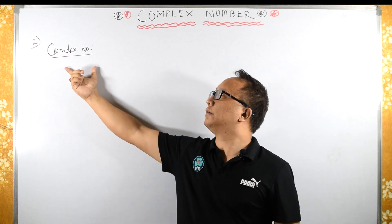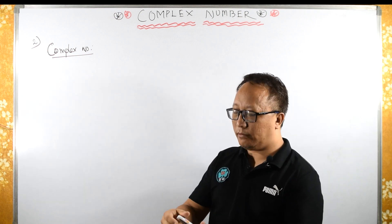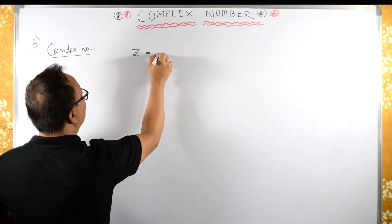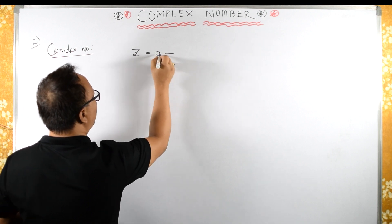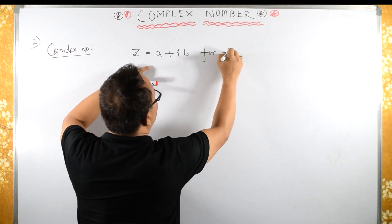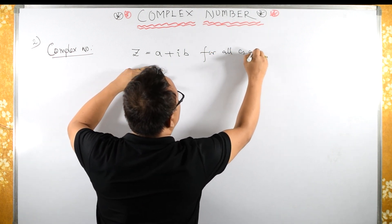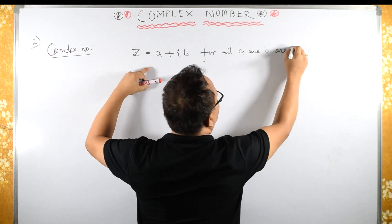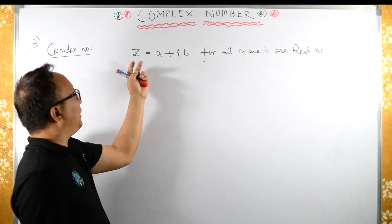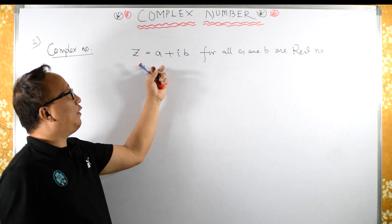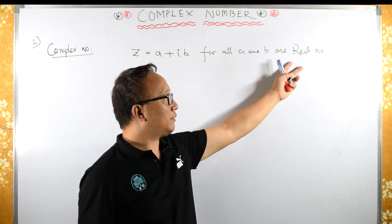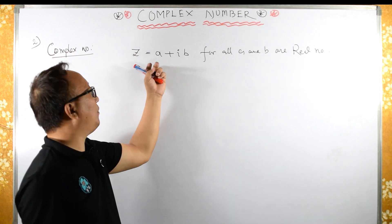Let us define what is a complex number. The definition of a complex number: we denote complex number Z as being of the form A plus iB, for all A and B that are real numbers. So any number Z, if it can be expressed in the form A plus iB where A and B belong to the real numbers, then this number is called a complex number.